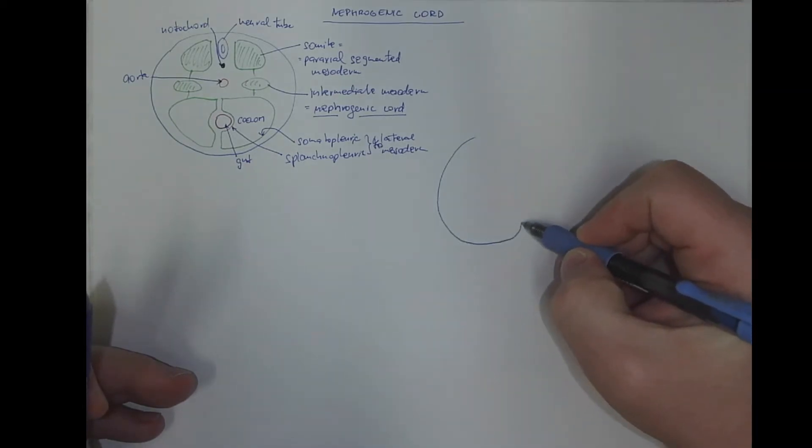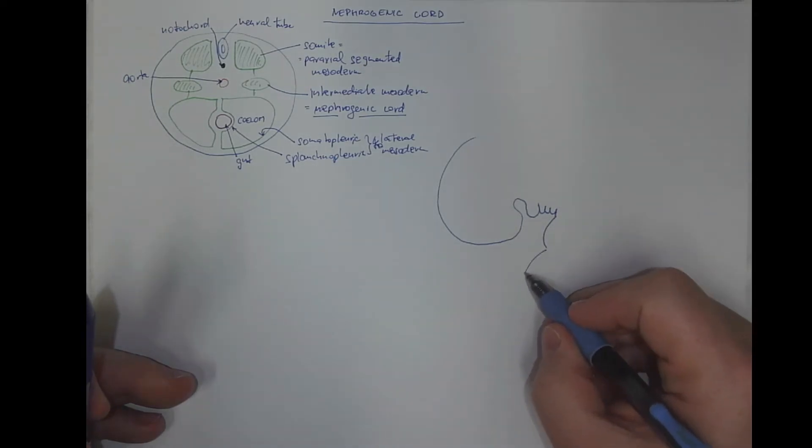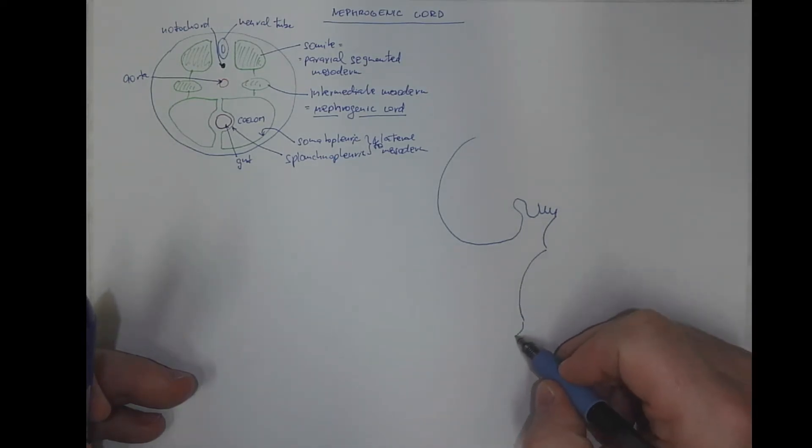This would be the head with the stomodeum. The pharyngeal arches, first, second, third, fourth. The heart, the liver, the umbilical cord.